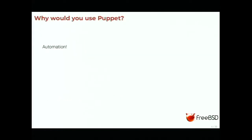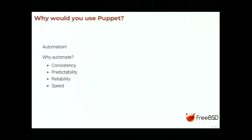Let's start by asking: why would you use Puppet? We use Puppet for automation, but what do you want to automate? Generally you want to automate for consistency, predictability, reliability, and speed — not necessarily in that order, as this is alphabetical. The idea is that if you have configured four nodes the same way, you expect them to do the same job.